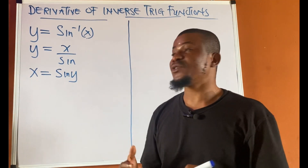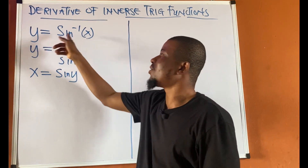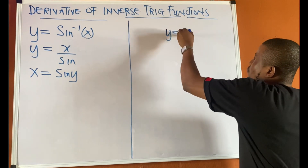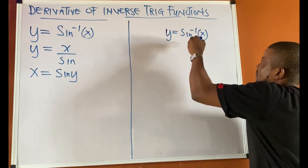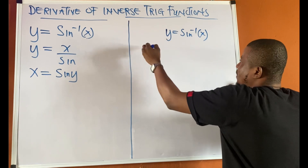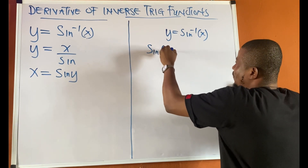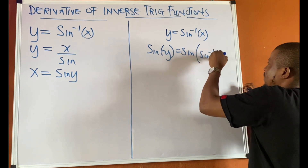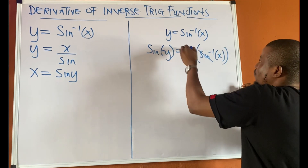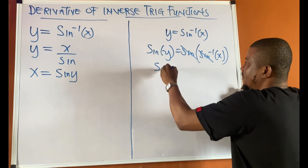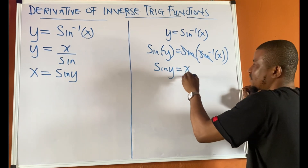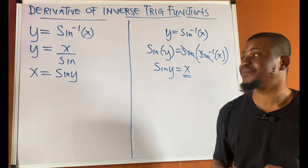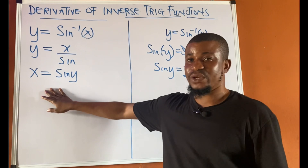Another way to tackle this is to take sine on both sides. If we have y equal to sine inverse of x and take sine of both sides, sine of sine inverse of x breaks down, giving us sine y equal to x. Both approaches are fine, but let's work with x equal to sine y.